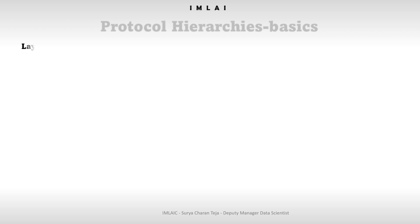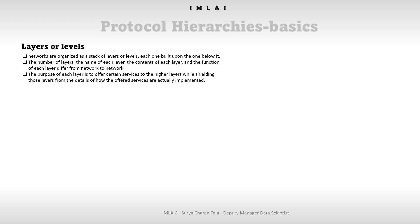To reduce design complexity, most networks are organized as a stack of layers or levels, each one built upon the one below it. The number of layers, the name, contents, and function of each layer differ from network to network. However, the purpose of each layer is to offer certain services to the higher layer while shielding those layers from the details of how the offered services are actually implemented.